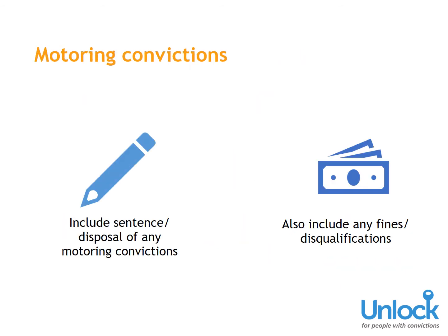If you've received a motoring conviction, you'll need to make sure that you include a sentence or disposal of any motoring endorsements onto the calculator. Endorsements need to be added as well as any other sentence or disposal that you were given in court, such as a fine or a disqualification. It's important to do this, as motoring endorsements have their own rehabilitation period of five years. If you miss this out, your results aren't going to be accurate.